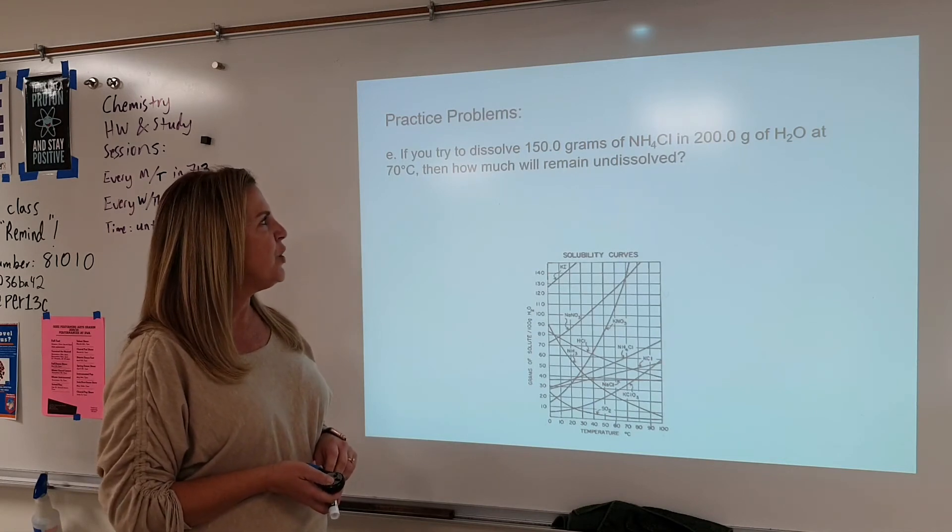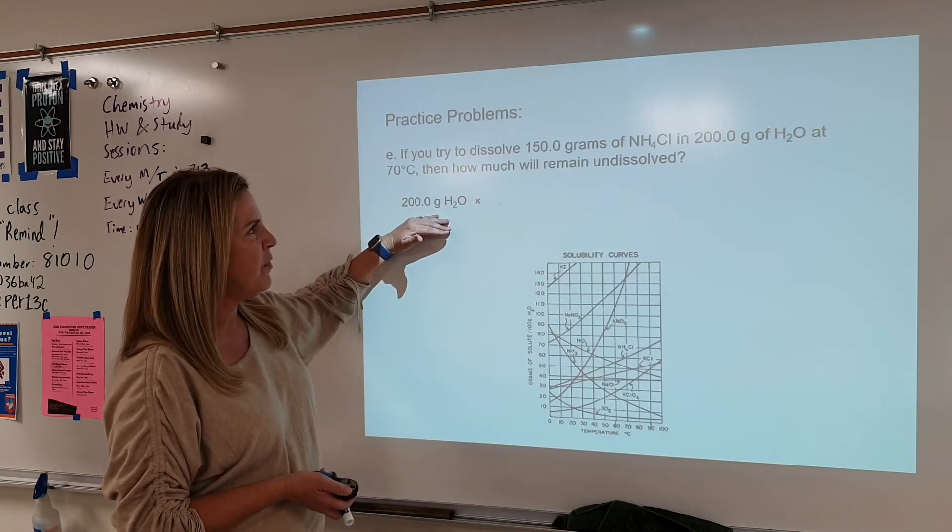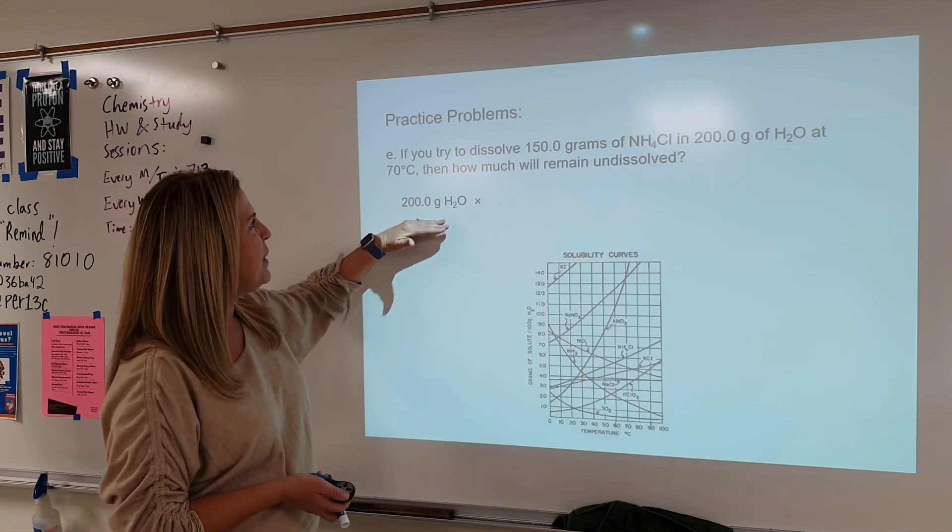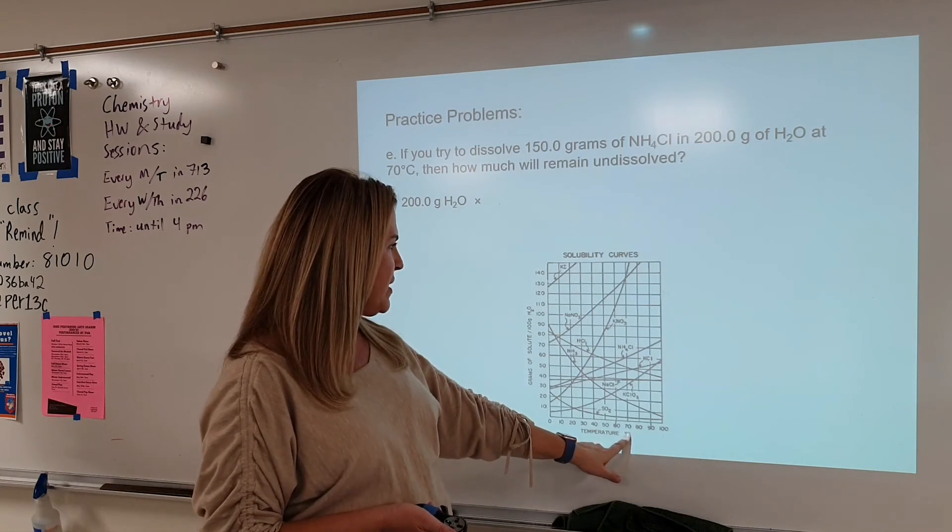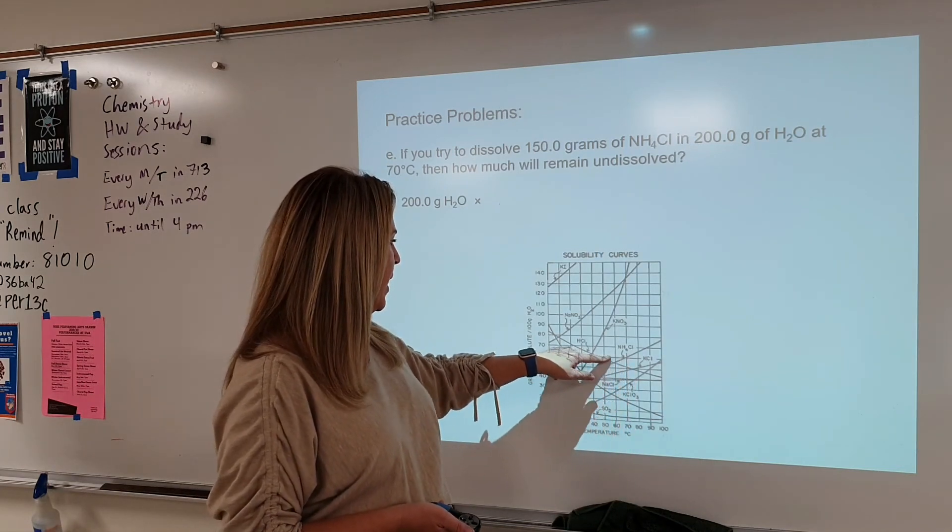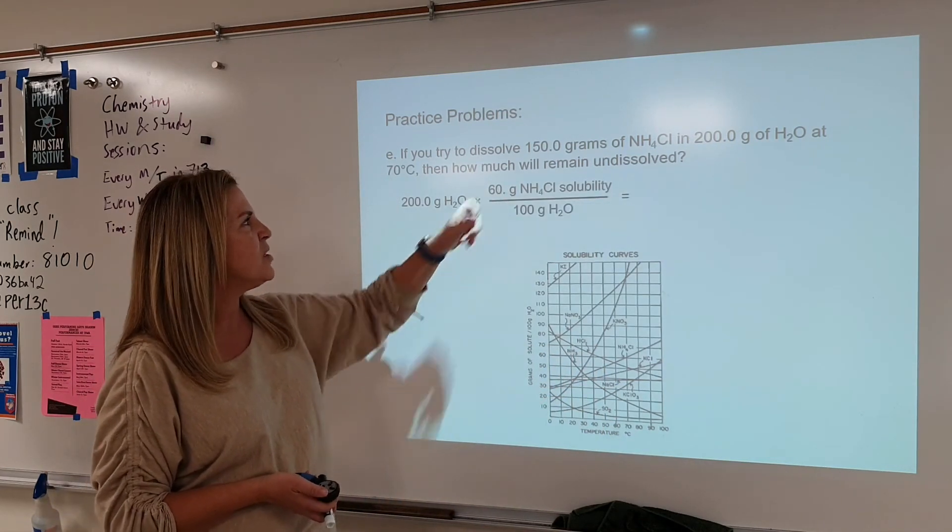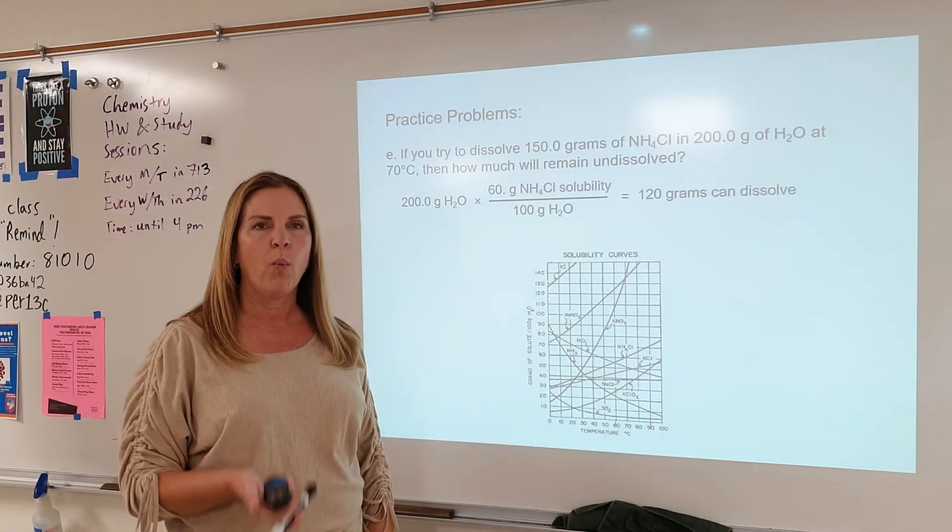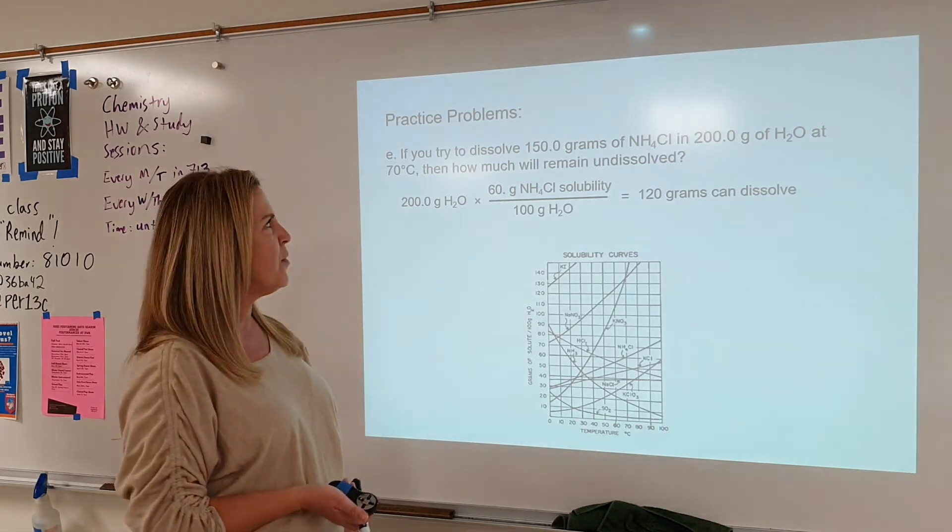All right. Well, what we want to do is we're going to take our 200 grams of water that's given, and we're going to find out how much ammonium chloride can be dissolved at 70 degrees Celsius. So using your graph, you're going to come up to ammonium chloride, which is right there. You're going to come across, and it looks like it's about 60 grams. So for every 100 grams, it's going to be 60. So I know I can dissolve 120 grams. That's it. After that, it's going to be solid down at the bottom of my container.